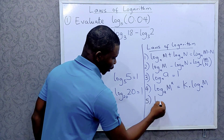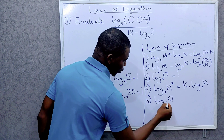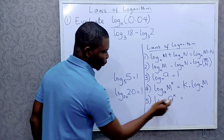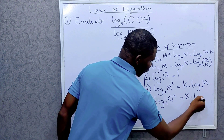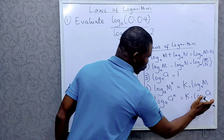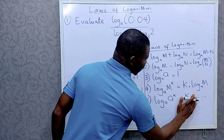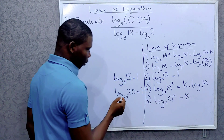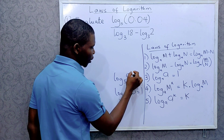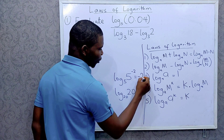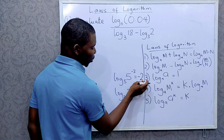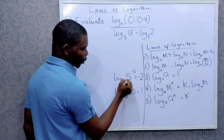Number 5 is similar to law 4. From law 4, you know that k can come in front like this and multiply log base a of a. But remember that log base a of a is equal to 1, so this is k times 1, which is still k. So simply, if you have log base 5 of 5 raised to power minus 2, this equals minus 2. When the base and the argument are the same, the result is just the power.